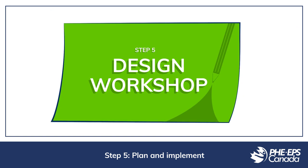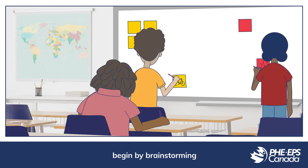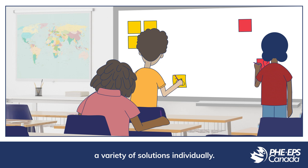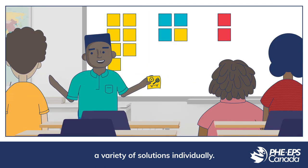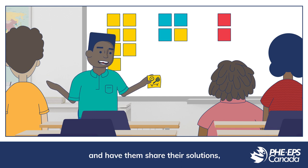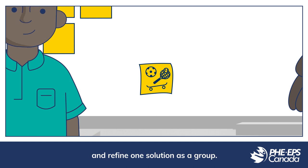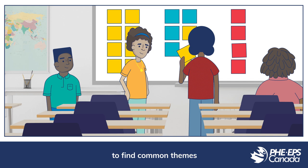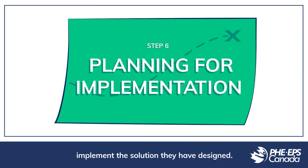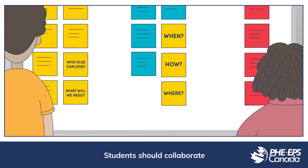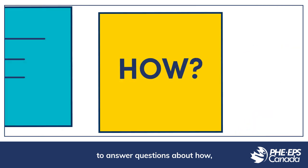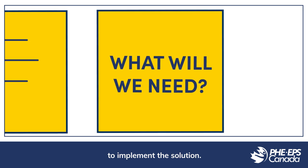Step 5: Plan and implement a design workshop where students begin by brainstorming a variety of solutions individually. Put students in small groups and have them share their solutions, provide feedback to each other, and select and refine one solution as a group. Then bring the entire group together to find common themes and decide on a final solution.